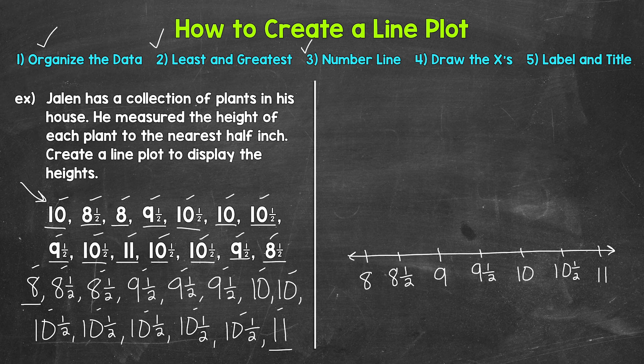And we can move on to the next step where we need to draw the x's. The x's show the number of times each height occurred. So let's start with 8. How many plants were 8 inches tall? 1. So we need 1 x above 8. Now as we go along, we will try our best to be as neat as possible.